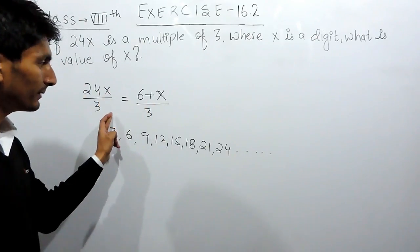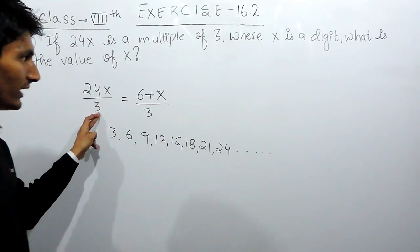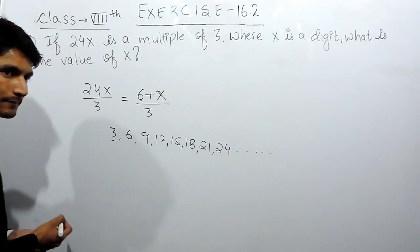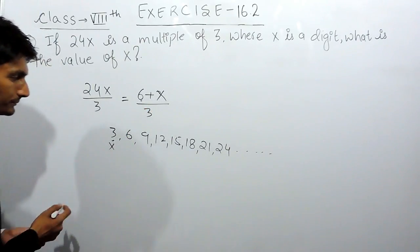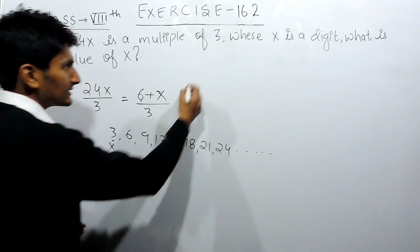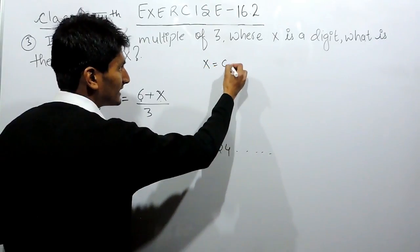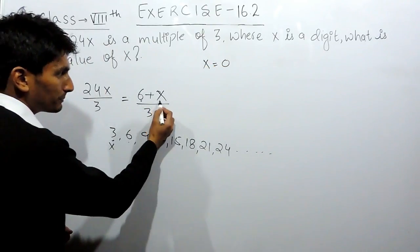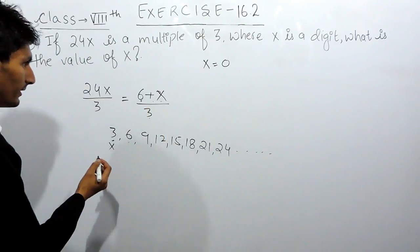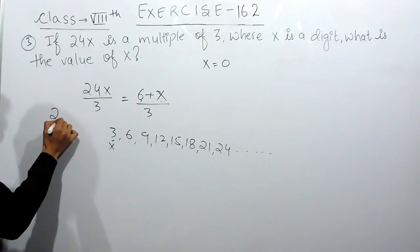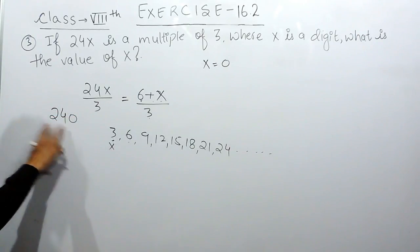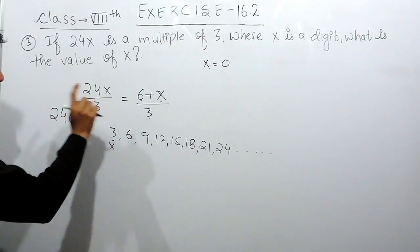I can't make 6 plus something equal to 3 — that's impossible. But if I substitute x equals 0, this becomes 6 plus 0, which is 6, and 6 is exactly divisible by 3. So the first multiple of 3 is 240, where x equals 0.